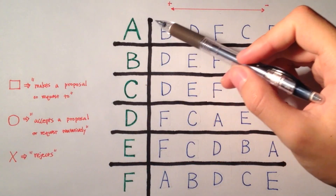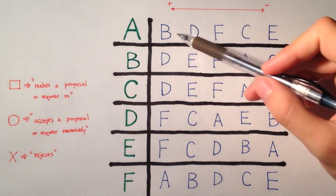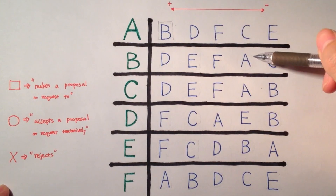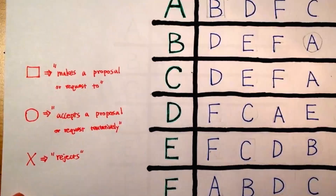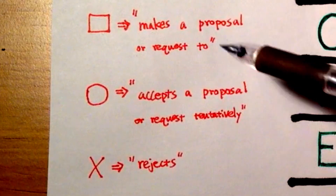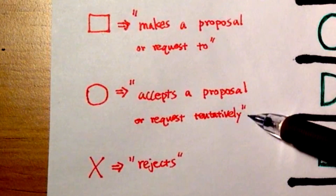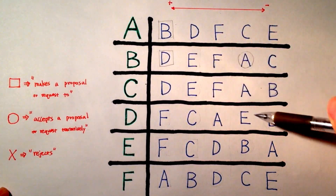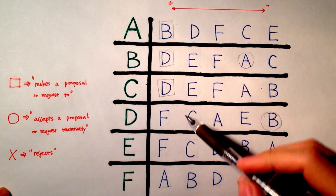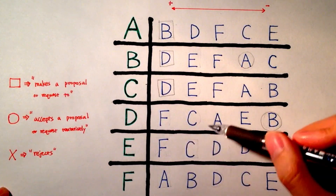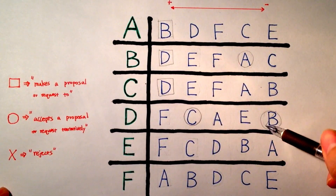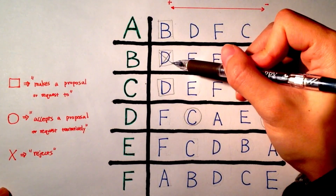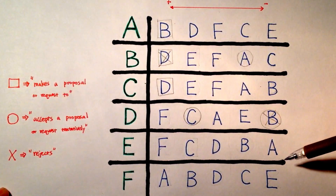Starting from A, B is the most preferred partner who has not rejected A. Nobody has been rejected in the beginning, so A proposes to B and B accepts. For notations, let's use a square for a proposal made to somebody and a circle for an accepted proposal from somebody. Moving on, B proposes to D and gets accepted immediately. C also proposes to D, and now D's got to choose. By referring to D's preference ranking, we can see that C is more preferred than B, therefore D rejects B and accepts C. At the same time, B has to cross out D as well, since he will never propose to D again.